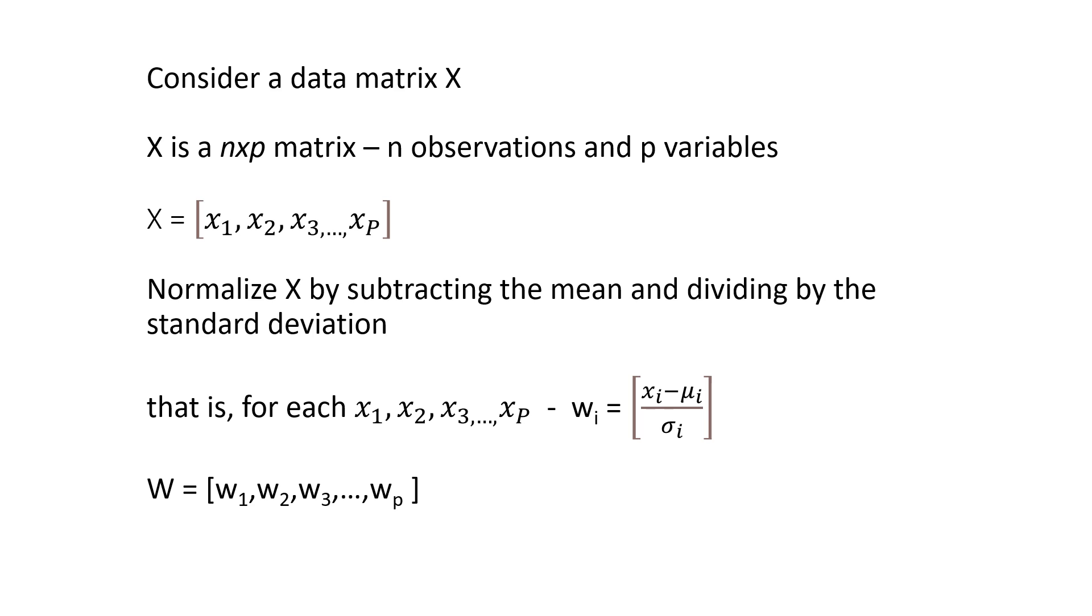Consider a data matrix X. X is an n by p matrix. We have n observations and p variables. So each Xi is an n by 1 vector.